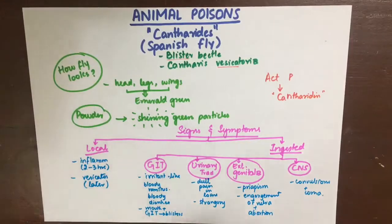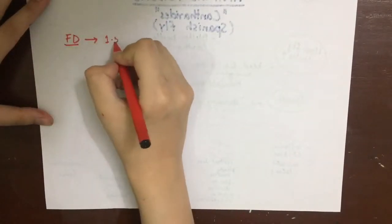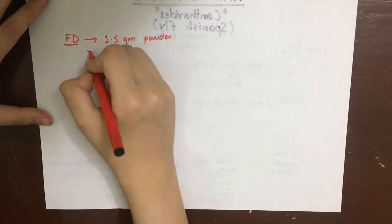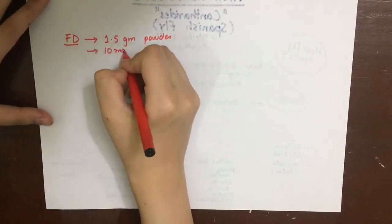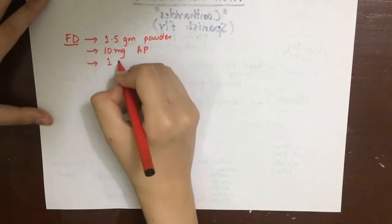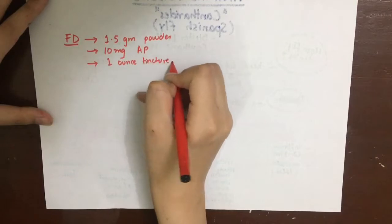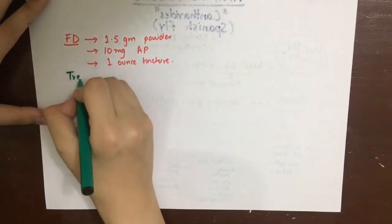The active principle of Cantharides is cantharidin, which is responsible for the blisters and vesication of the skin. The fatal dose is about 1.5 grams of the powder form, 10 milligrams of the active principle, and one ounce of the tincture.